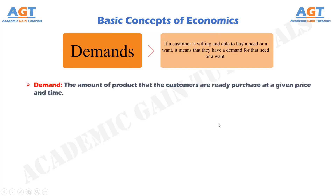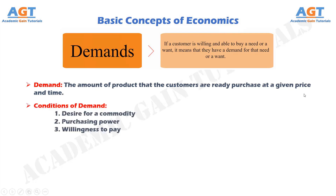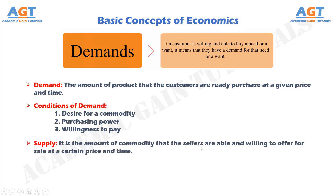Demand is the amount of product that the customers already purchase at a given price and time. The conditions of demand are: desire for a commodity, purchasing power, and willingness to pay. Supply is the amount of commodity that the sellers are able and willing to offer for sale at a certain price and time.